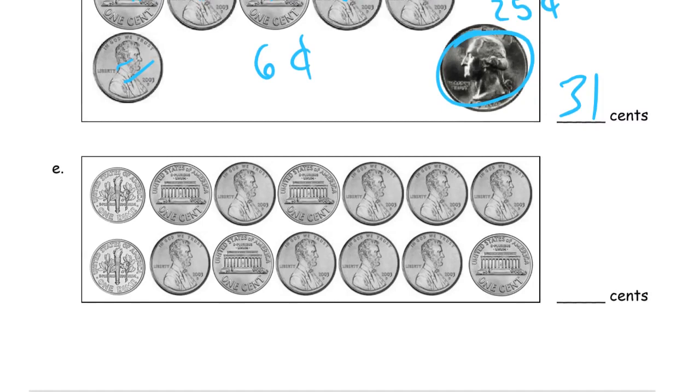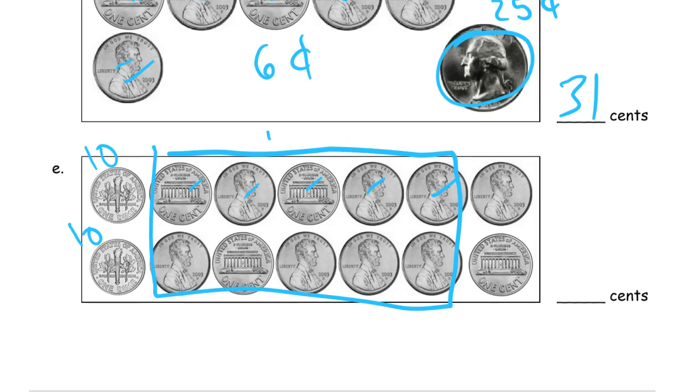And finally here we have a bunch of pennies and 2 dimes. So this dime is 10. This dime is 10. And then we have 1, 2, 3, 4, 5. So this is a 10. That's a 10 group of pennies. That's another 10.